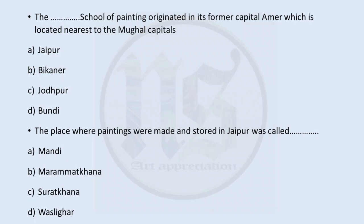The Jaipur school of painting originated in its former capital Aamir, which is located nearest to the Mughal capitals. The Mughal capitals were Delhi, Agra and Fathipur Sikri. The area of Aamir is closest to these capitals, and if you remember the movie Jodha Akbar, Raja Bharmal married his daughter to King Akbar and later Raja Jai Singh moved the capital to Jaipur, giving it his own name. So our answer is A, Jaipur. The next question: the place where paintings were made and stored in Jaipur was called what? The answer Mandi is from Bikaner; Maramat Khana and Vasligar are made-up words. Surat Khana is our correct answer. Raja Jai Singh reorganized Surat Khanas and called Mughal artists there where paintings were made and stored. So our correct answer is C.